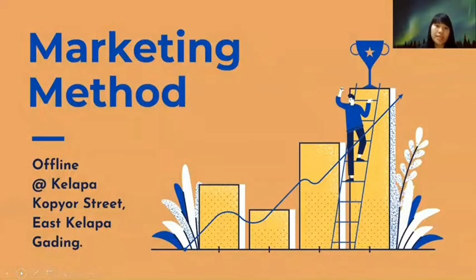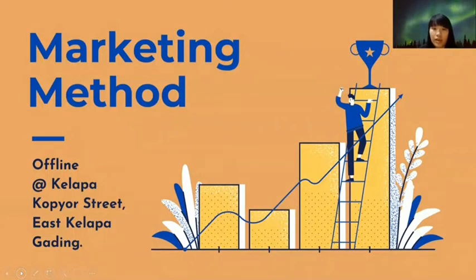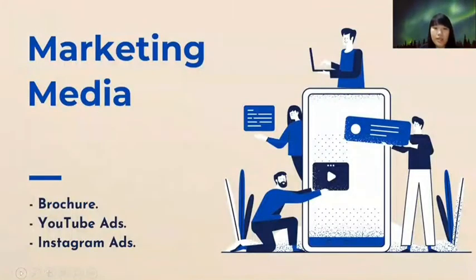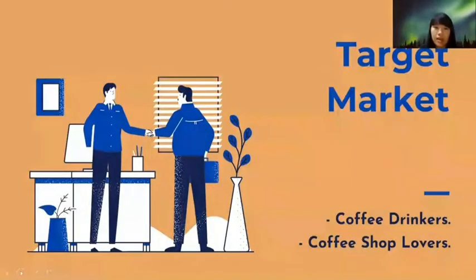Now I will explain about the marketing. For the marketing method, I decided to choose the offline method. It is located at Kelapa Kopior Street, East Kelapa Gading. Kopi Lee uses browser, Instagram ads, and YouTube ads as the marketing media. Kopi Lee has two target markets: coffee drinkers and coffee shop lovers.